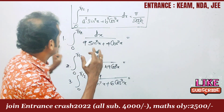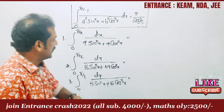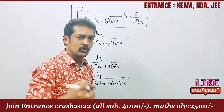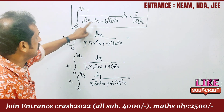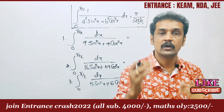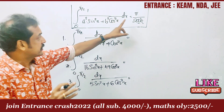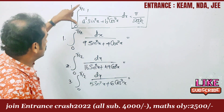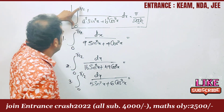Now we will try to figure out the first question: integral from 0 to π/2 of dx divided by (9sin²x + 4cos²x). The standard question format is: integral from 0 to π/2 of 1/(a²sin²x + b²cos²x) dx, and the answer is always π/(2ab).